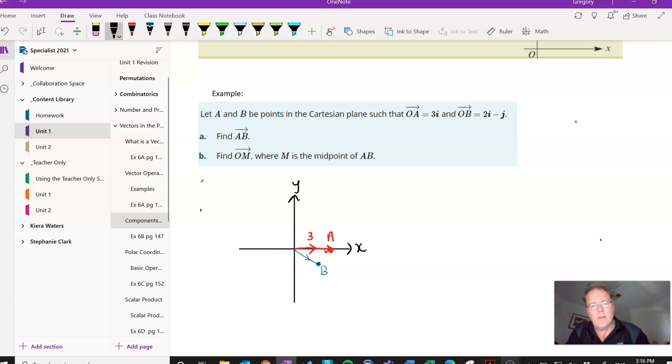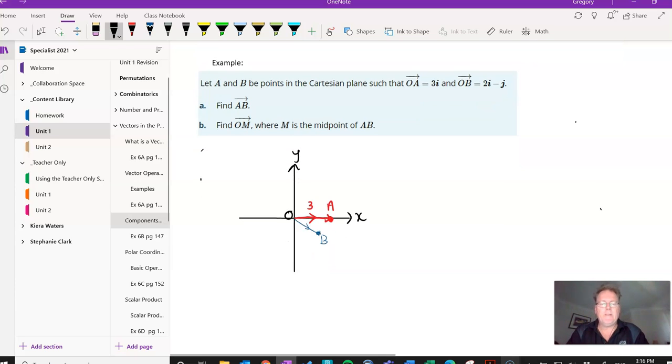So remember O indicates the origin. So anything O something is always indicated from the origin to that point. And it's 2 units along and 1 unit down, for the negative J.